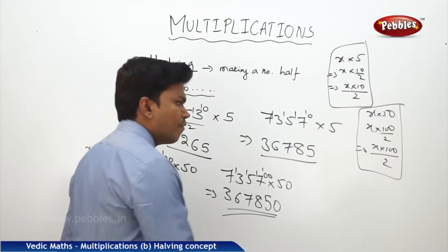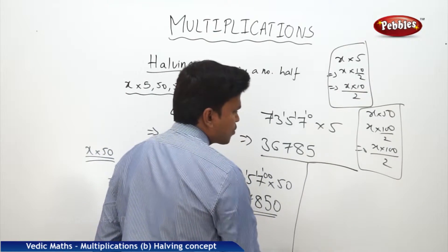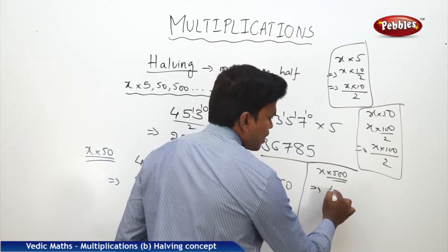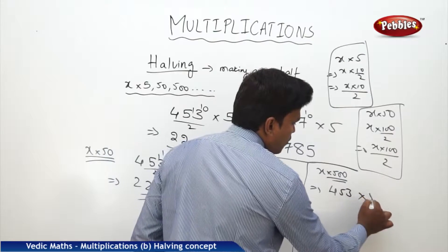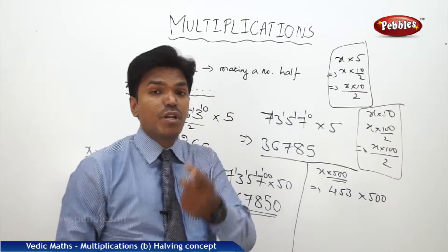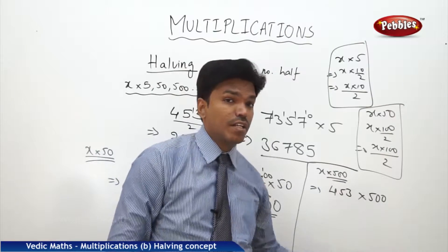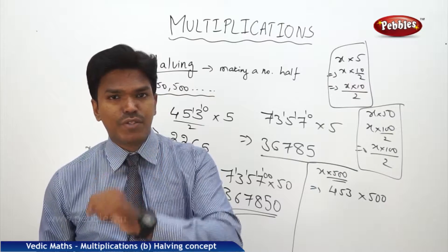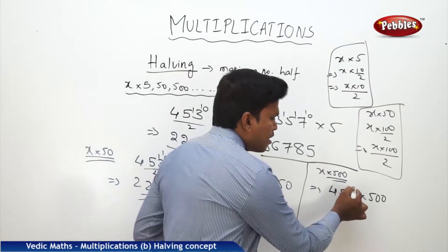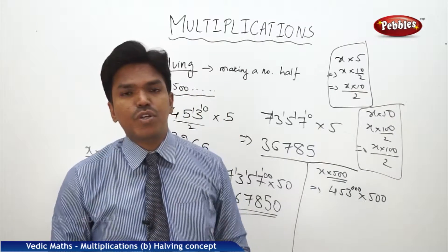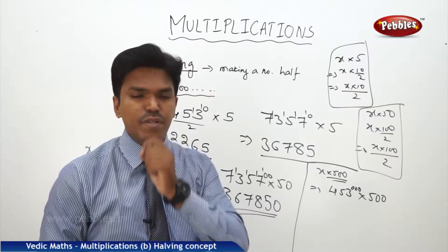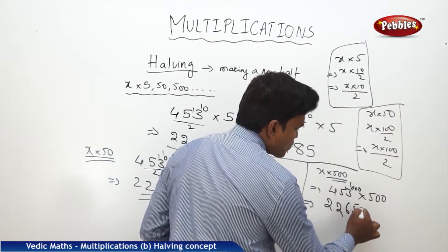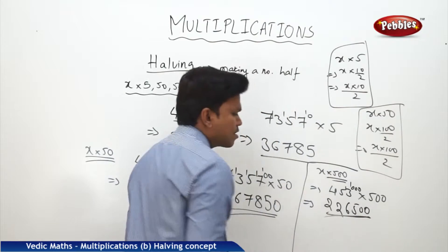Similarly for x × 500: take 453 × 500. Since 500 = 1000/2, add three 0s at the end, then make it a half: 2 twos, 2 twos, 2 sixes, 2 fives, dropping two 0s at the end. Answer is 226500.